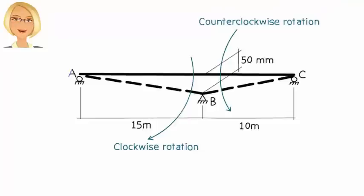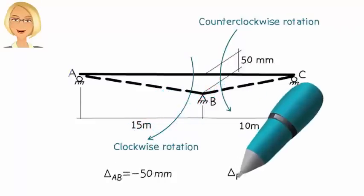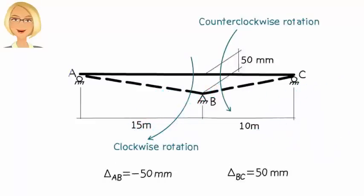According to our previous discussion on the slope deflection method, this means AB has a differential vertical displacement of negative 50 millimeters and BC has a differential vertical displacement of positive 50 millimeters.